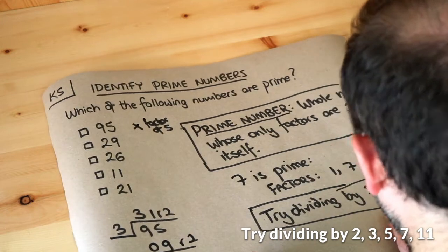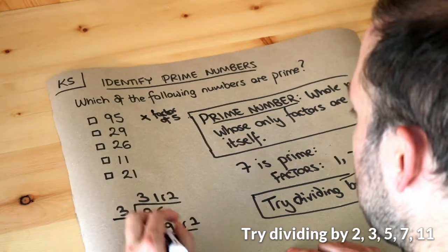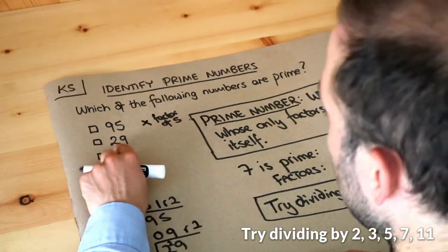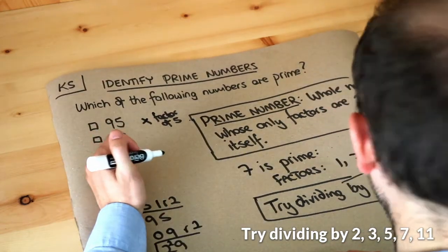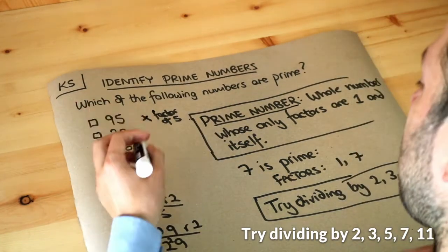Let's try five. Does 29 divide by five? The last digit is not zero or five, so it doesn't divide by five. What about seven? Does seven go into 29? No, it doesn't. 28 is in the seven times table, so 29 is not. And 11? Is 29 in the 11 times table? No. Therefore, 29 is prime.